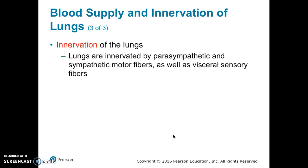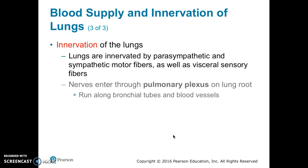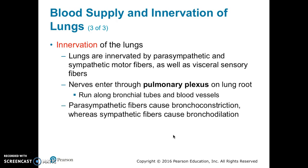The lungs are innervated by parasympathetic and sympathetic motor fibers, as well as visceral sensory fibers. Nerves enter through the pulmonary plexus on the lung root and run along the bronchial tubes and blood vessels. Parasympathetic fibers cause bronchoconstriction, whereas sympathetic fibers cause bronchodilation.